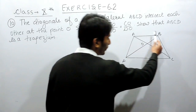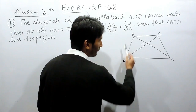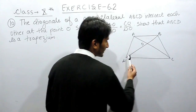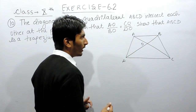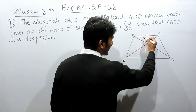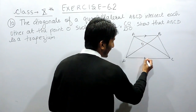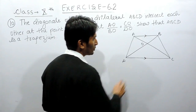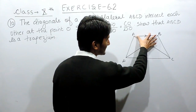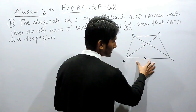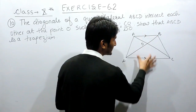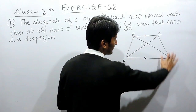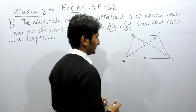Here ABCD is a quadrilateral, meaning a four-sided closed figure. You have to prove that this is a trapezium. A quadrilateral having two sides parallel to each other is known as a trapezium. So you have to prove that AB is parallel to DC, and if these two lines are parallel, then this quadrilateral is considered a trapezium.